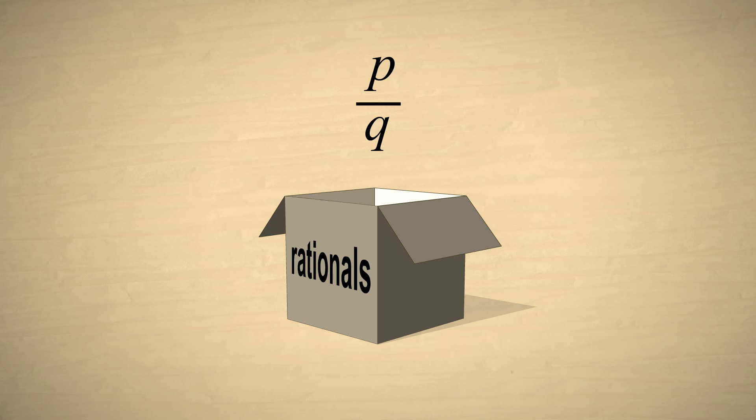Notice that p over q can not only represent any fraction, but can also represent any integer if we let q equal one. In that case, the fraction p over q represents the same quantity as the integer p.